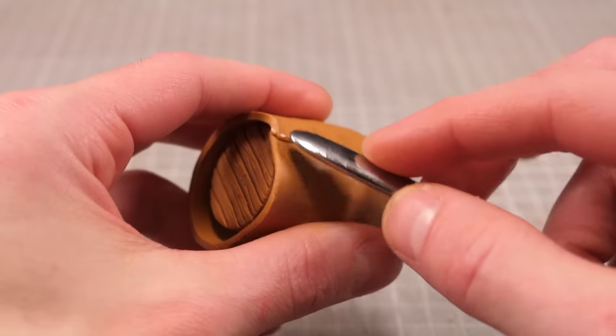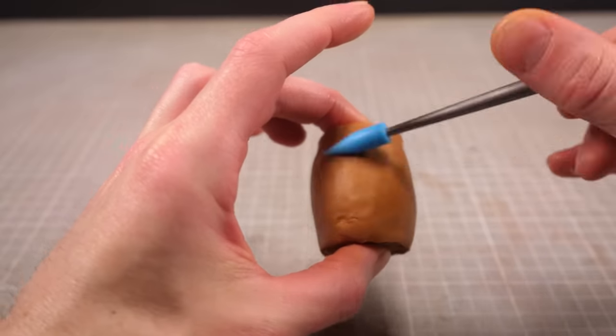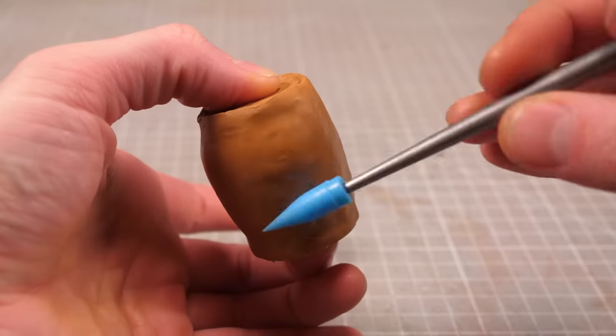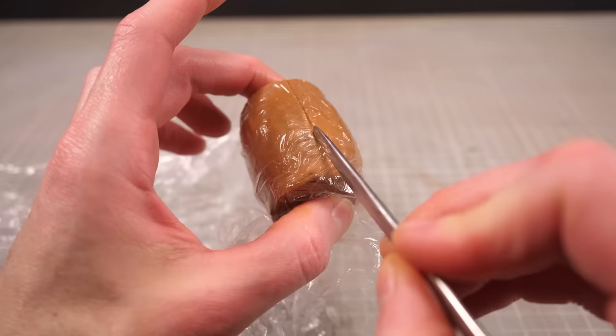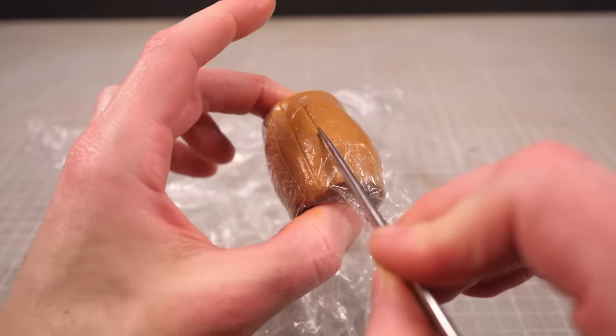I'll then smooth and shape my woody brown textureless tube until it resembles a woody brown textureless barrel before wrapping it in a layer of cling film and cutting some larger vertical grooves, which will be the aforementioned staves.